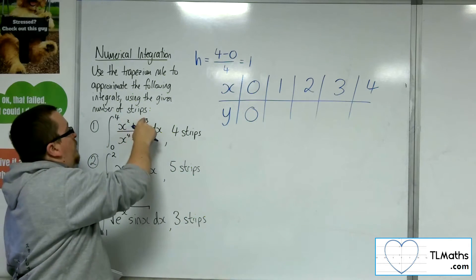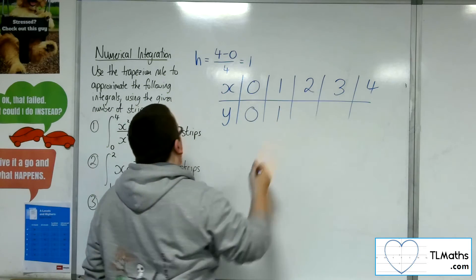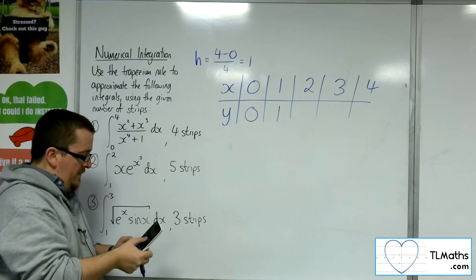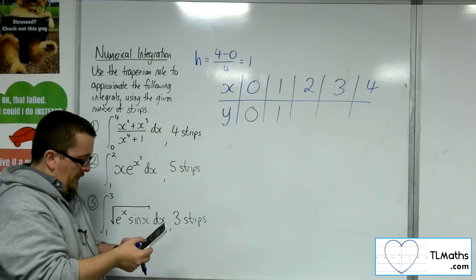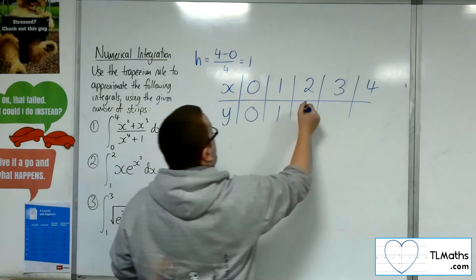We're also going to get one plus one over one plus one, so just one. Now when we put two in, we're going to get two squared plus two cubed over two to the four plus one. So that's twelve-seventeenths.